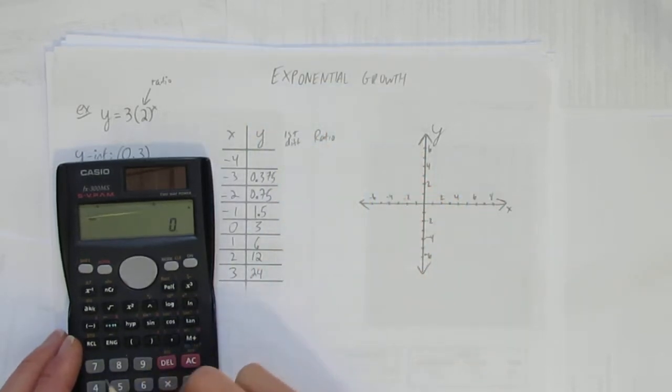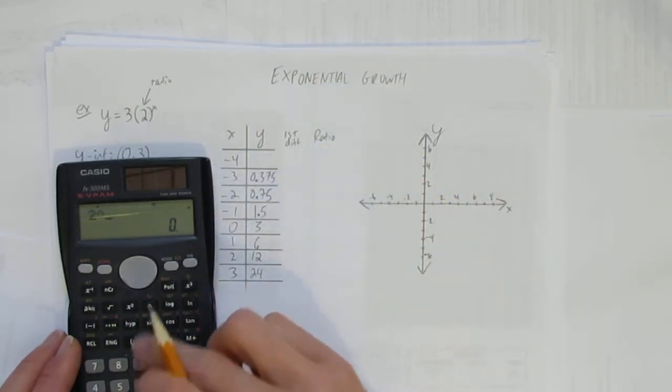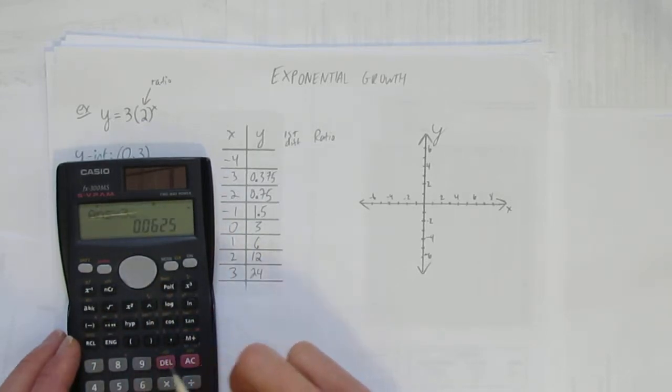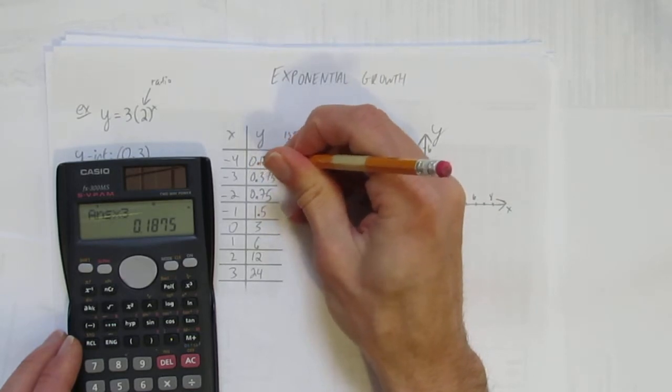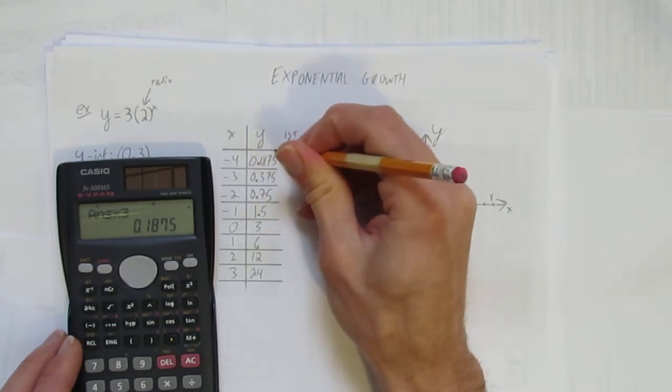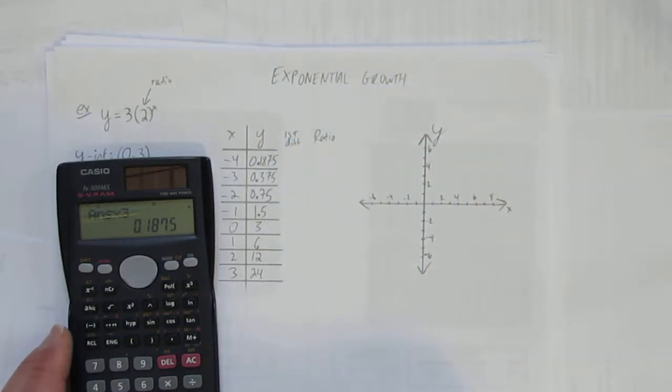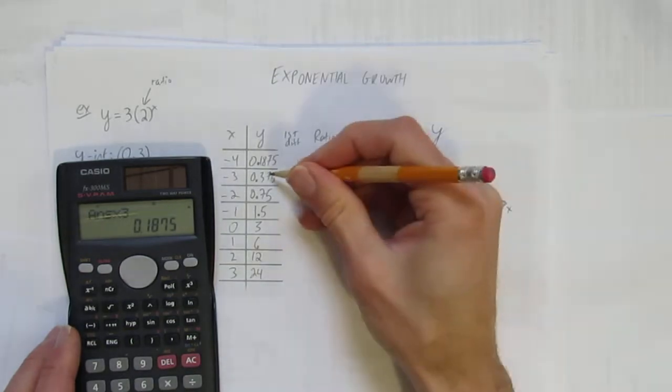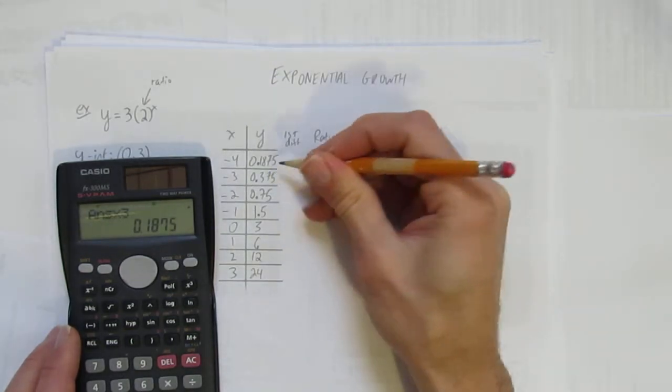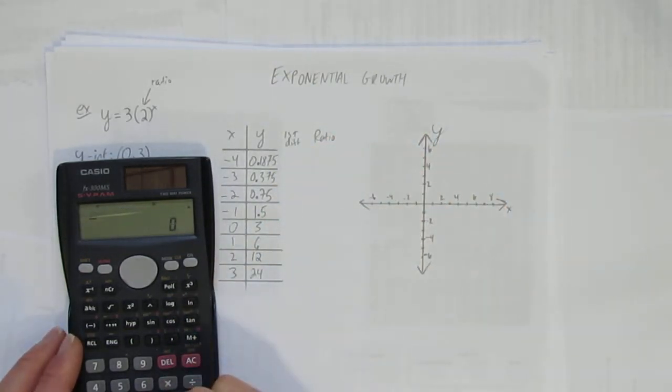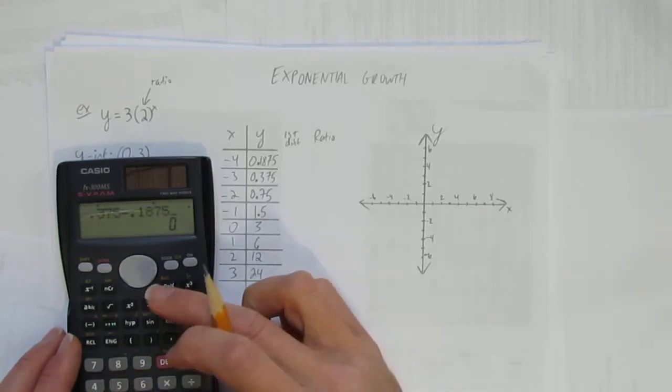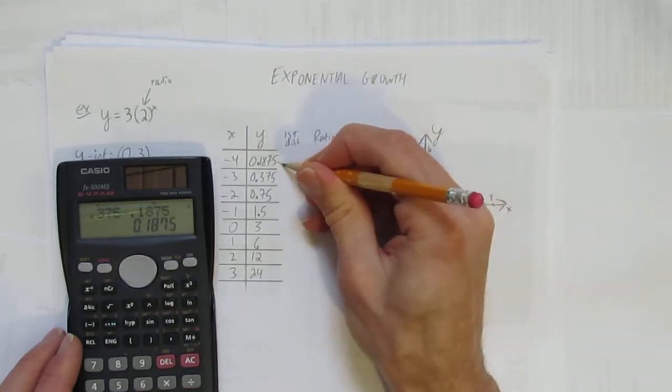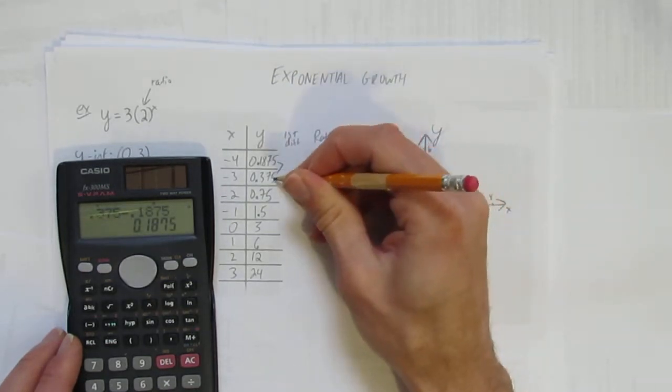What's 2 to the power of negative 4, times 3? Notice I'm hitting equals after each exponent—and some calculators, that's absolutely important to do. So I've got all my y values. Now I want to look at the first differences. The first differences are always the second number of y's take away the first number. So what's 0.375 minus 0.1875?